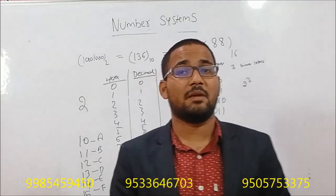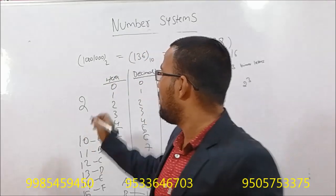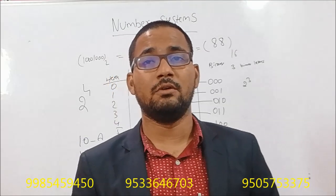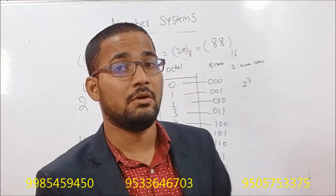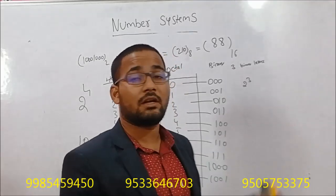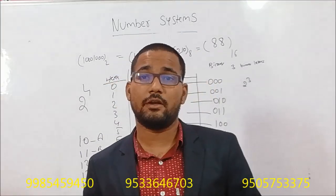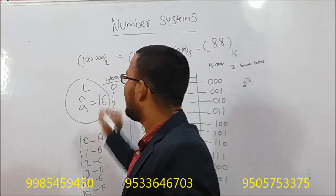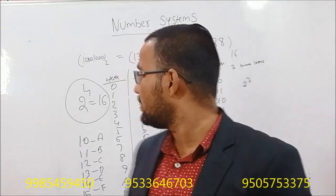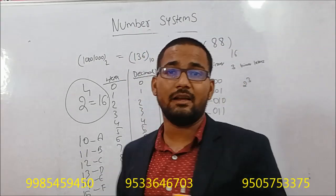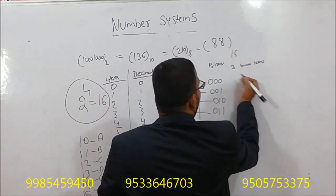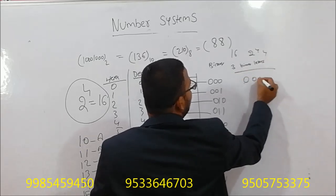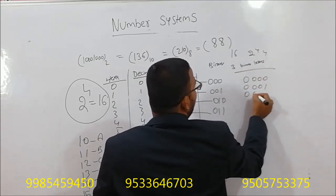If we count binary numbers, we have combinations of 4 binary digits, that means 2 power 4, giving us 16 combinations. In hexadecimal, we use 4 binary digits — 0000 through combinations — because 2 power 4 equals 16 overall letter combinations.